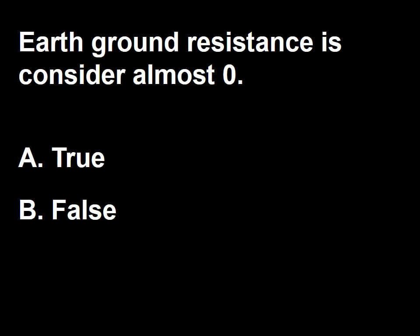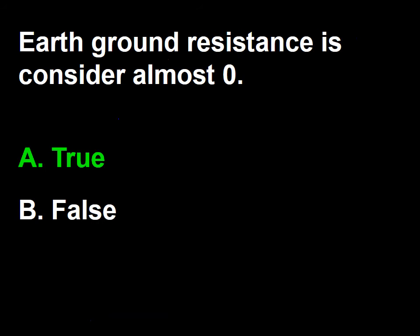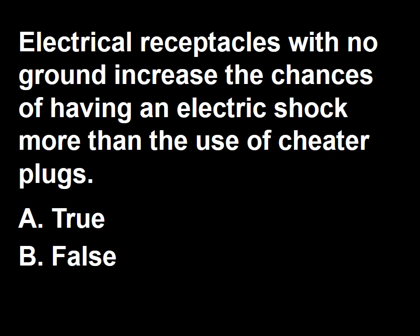Next question: earth ground resistance is considered almost zero — true or false? Earth ground resistance is considered the lowest, close to zero. The answer to this question is A — true. Next question: electrical receptacles with no ground increase the chances of having an electric shock more than the use of cheater plugs — true or false?